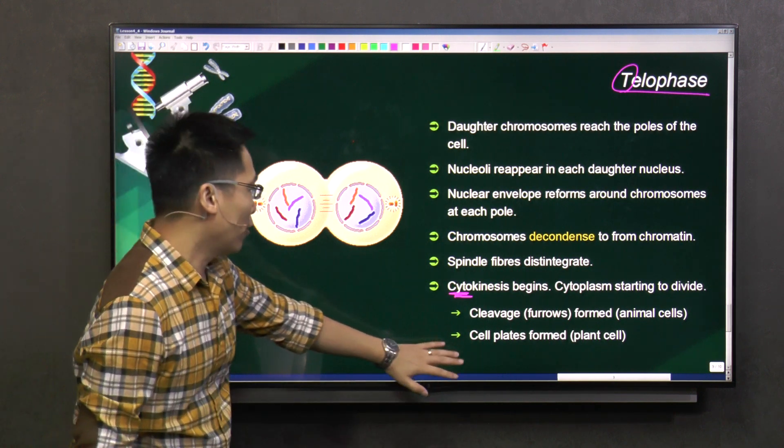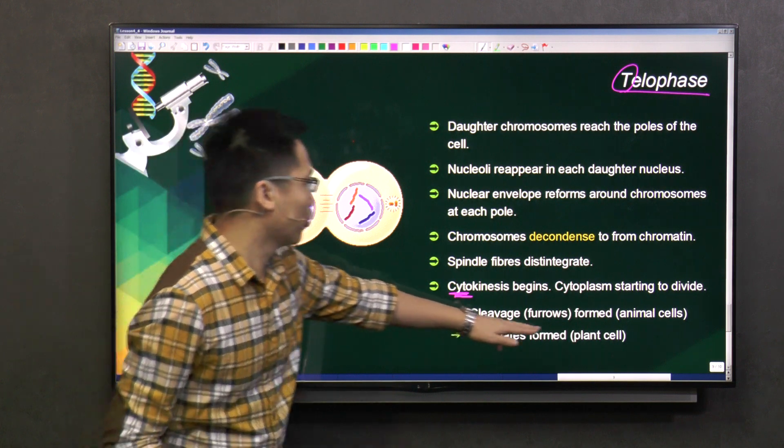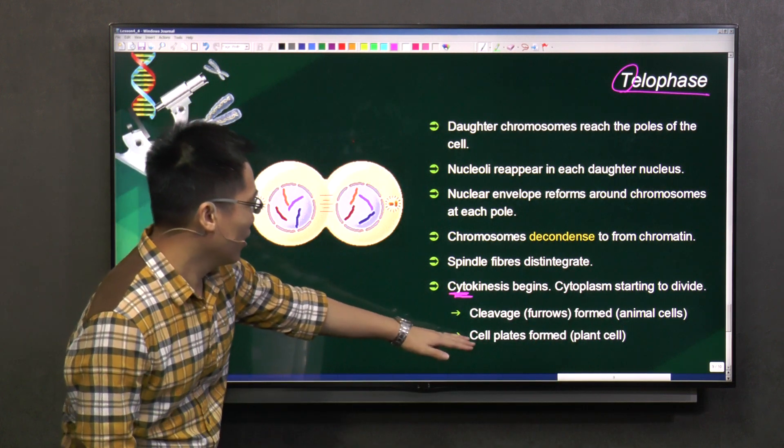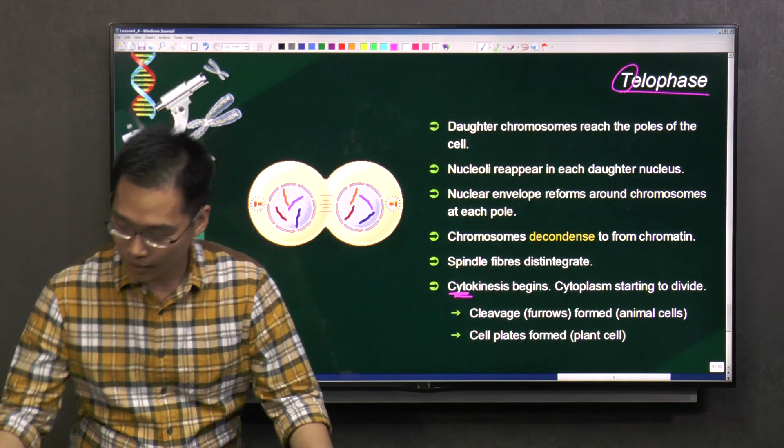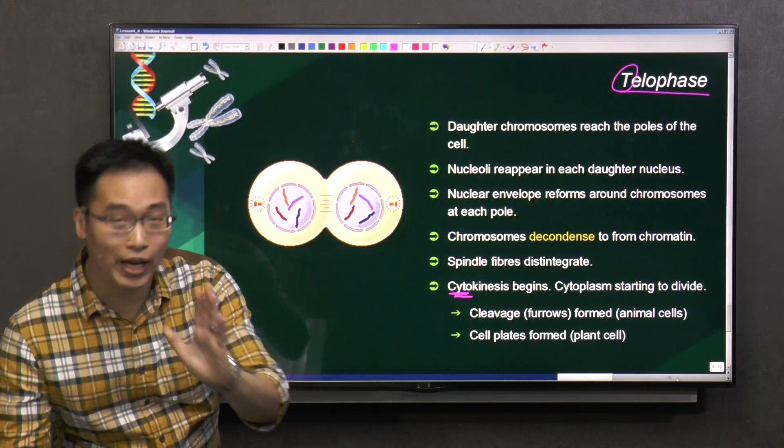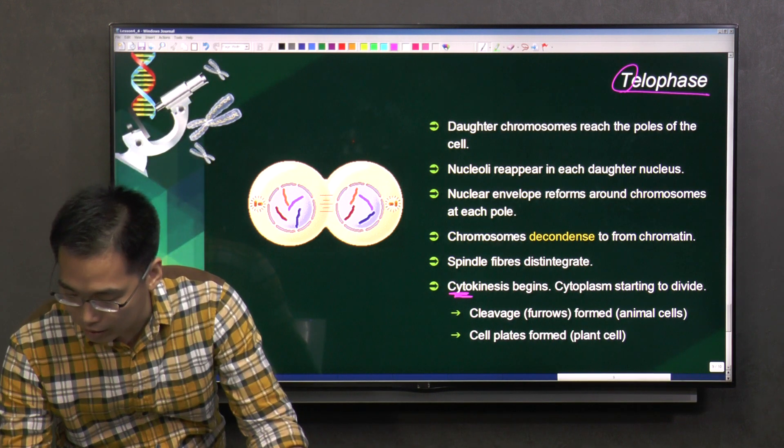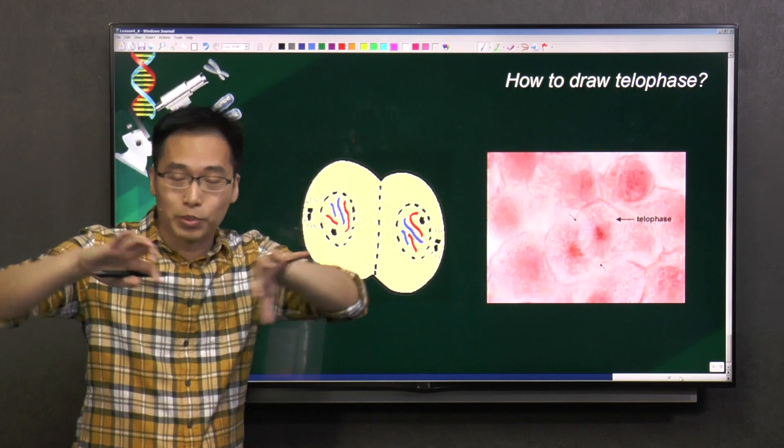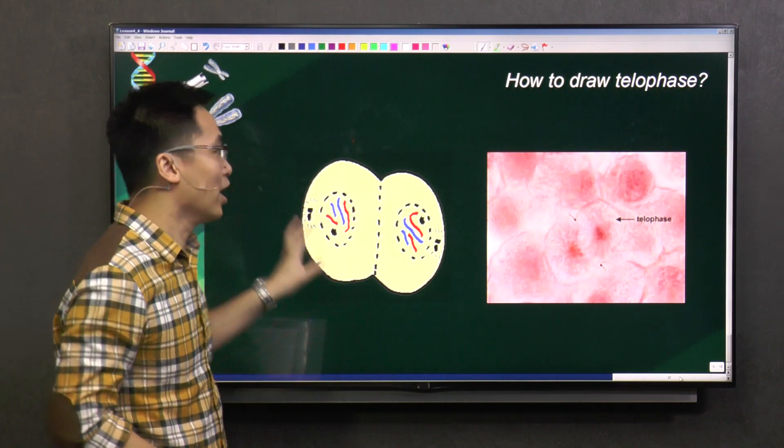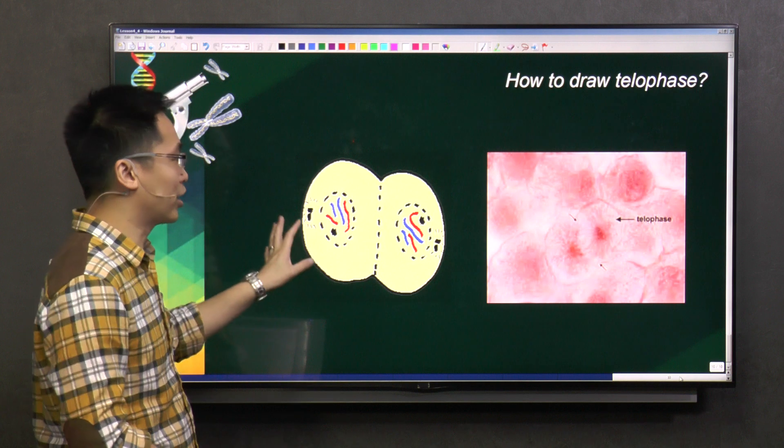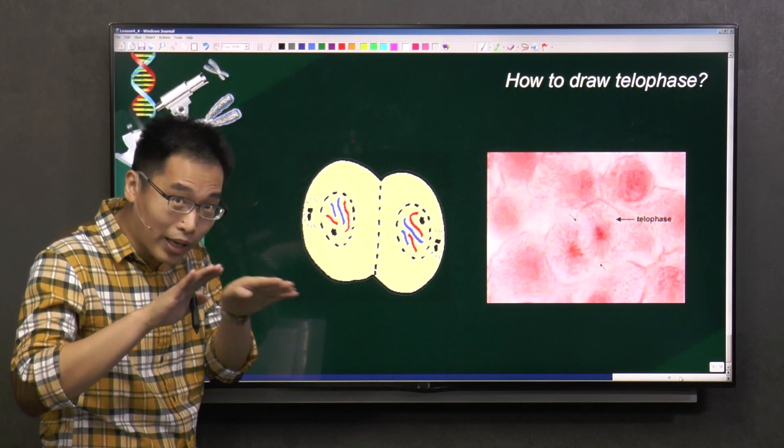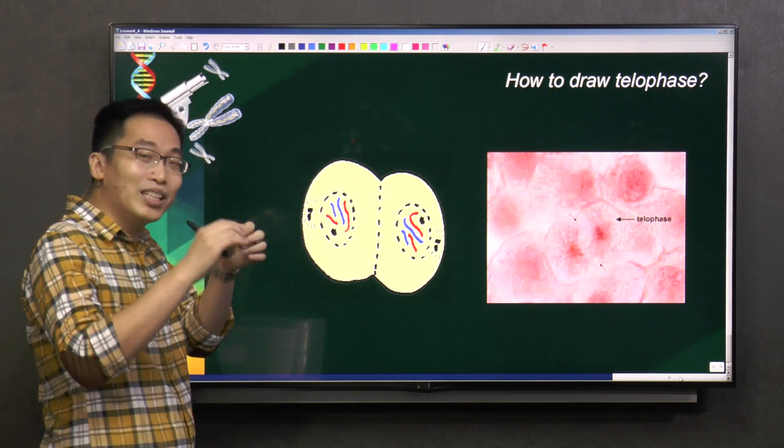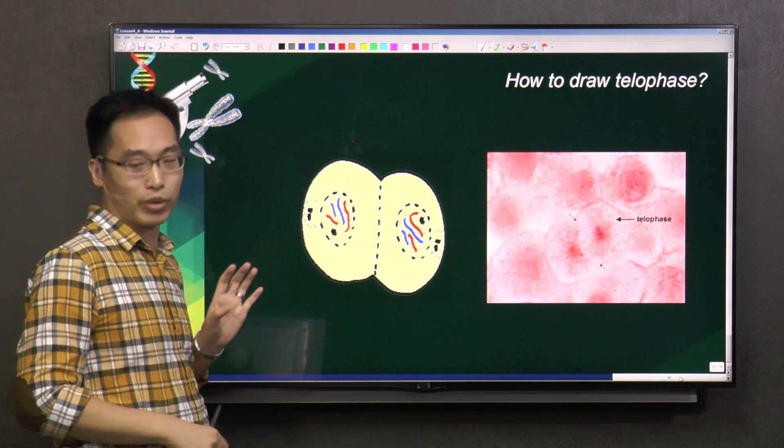So for animal cells, cleavage furrows form. And for plant cells, cell plates form. So slight difference when the two cells start to split. We'll learn more about cytokinesis next. But let's complete telophase first because actually cytokinesis is not part of mitosis. But there's a little bit of overlap because some of those processes start to happen.